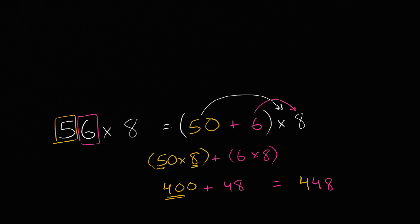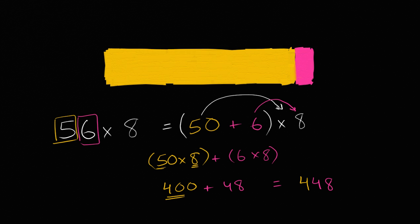And if it helps, we can also visualize this looking at an area of a rectangle. So imagine this rectangle right over here, and let's say that this dimension right over here is 8. It is 8 units tall, so that's the 8. And this entire dimension, this entire length here is 56. So the area of this rectangle is going to be 56 times 8, which is what we set to figure out. And to do that, what we could break it up into is 50 and 6.